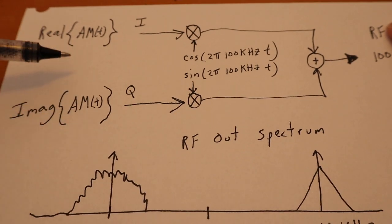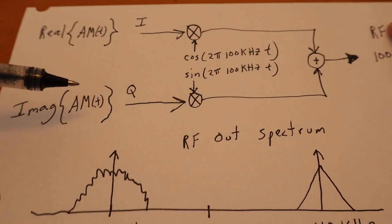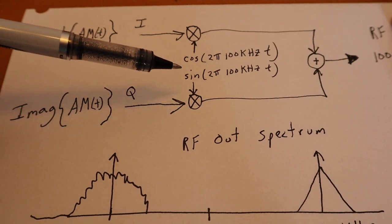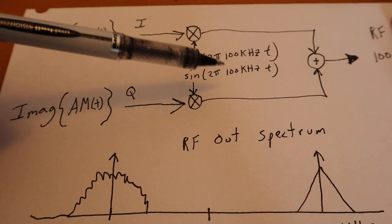So simply by changing these cosine and sine carrier terms puts this spectrum anywhere we want. The math back here does not need to change. The equations back here stay the same because they're what's called baseband. They're centered around DC. And to change the frequency, all we need to do is change the term in here.